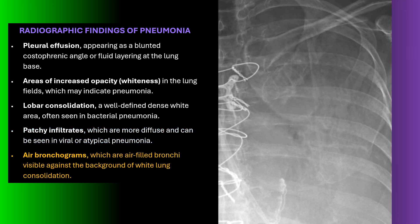One of the radiographic findings that is pathognomonic for pneumonia is the air bronchogram sign — where you can see air-filled bronchi visible against the background of white lung consolidation.